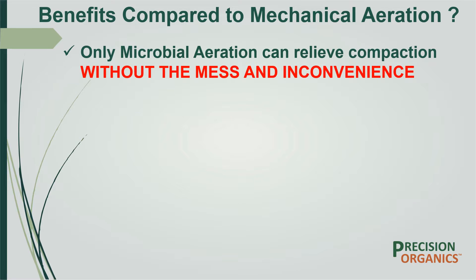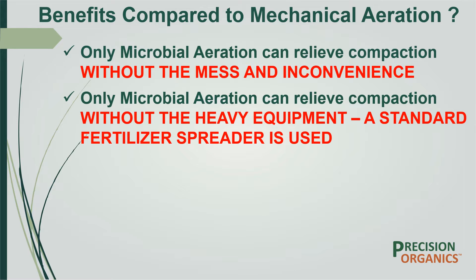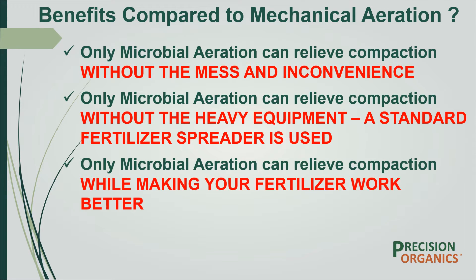Microbial aeration does not produce the muddy and sometimes messy soil plugs, and there is no need to mark your irrigation heads or pre-water the lawn in preparation of the procedure. No heavy mechanical equipment is used with microbial aeration — only a professionally calibrated fertilizer spreader to apply the natural and environmentally friendly product — and a microbial aeration will result in better uptake of nutrients by the roots of the grass plants due to the increased microbial activity.